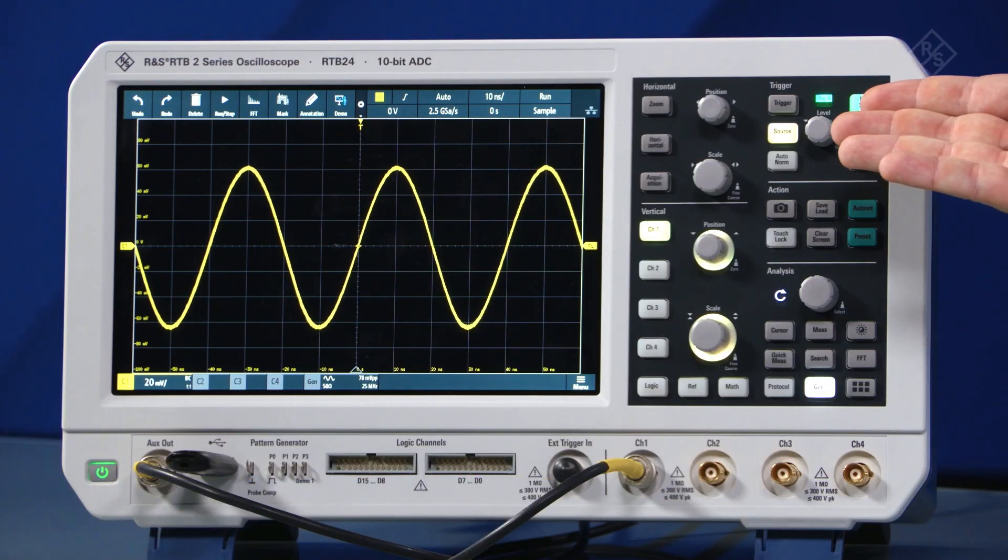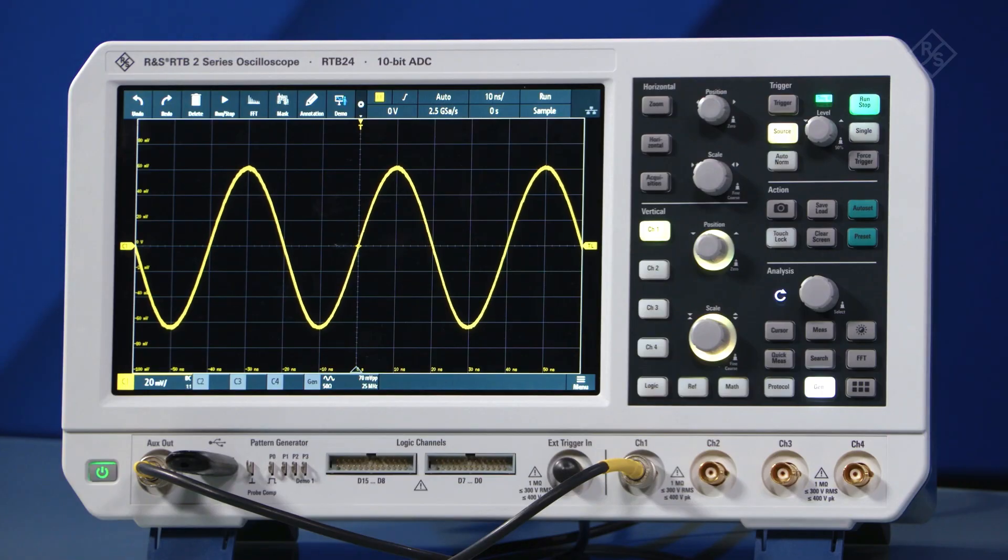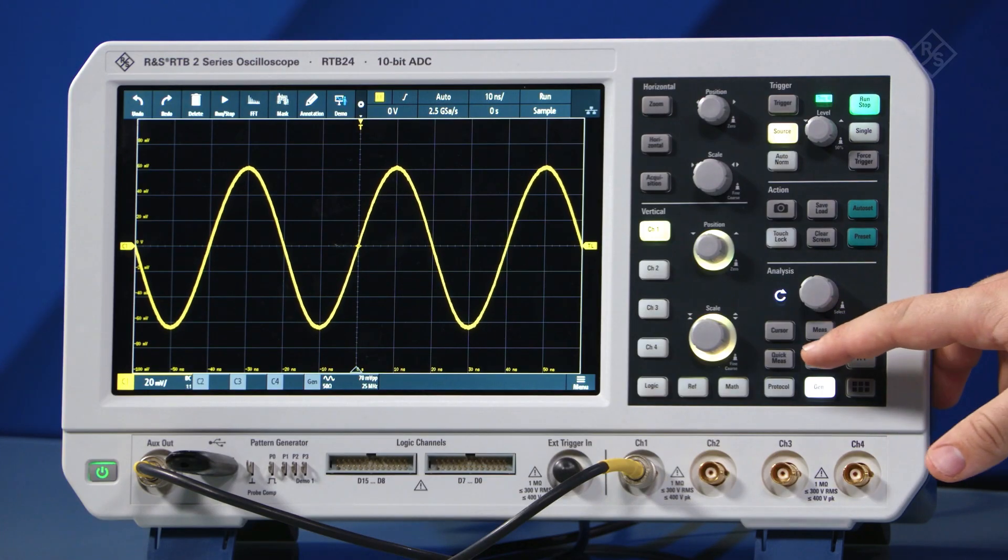Do you need a quick way to get basic statistics on your signals? With the RTP2 series oscilloscopes, get results by pushing the quick measure button.